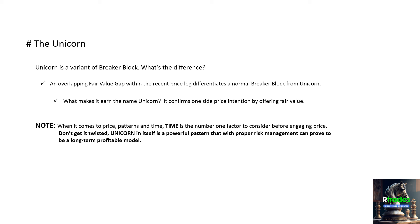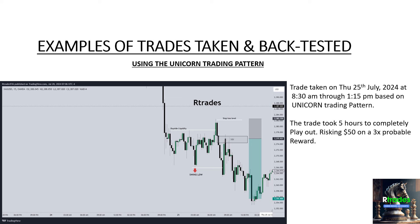I have examples of trades taken this week that I've back-tested as well. This trade was taken on Thursday, July 24, at 8:30 a.m. through 1:15 p.m. New York local time, based on the Unicorn pattern. You can study how this pattern forms and back-test it yourself. This trade took five hours to completely play out. I risked 50 and targeted three times that — a 1:3 risk-to-reward ratio, which is what I always use.